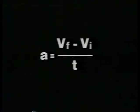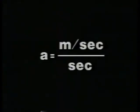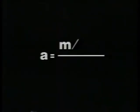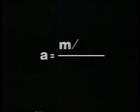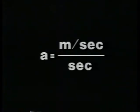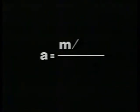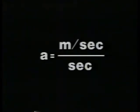What you end up with is a rate over time. You could call this meters per second per second, but usually an acceleration is expressed as meters per second squared.